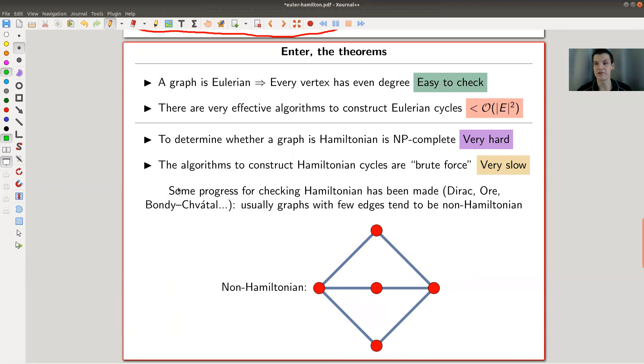The Eulerian question - whether a graph is Eulerian - is super easy to check. It's Eulerian if and only if every vertex has even degree. And it gets actually better, you can explicitly algorithmically construct an Eulerian cycle in a very quick way, roughly in the number of edges squared. It's as fast as it gets basically. I haven't checked the latest algorithms, but it's still very, very fast.